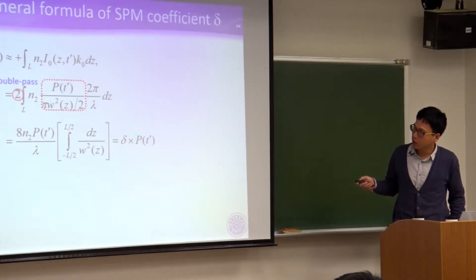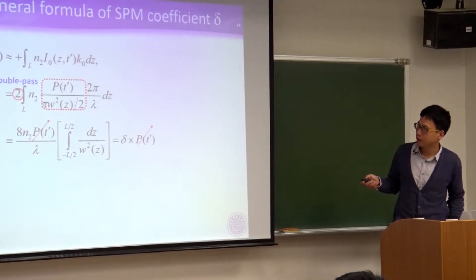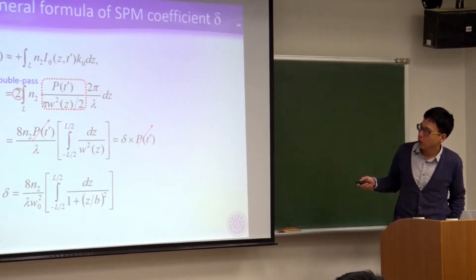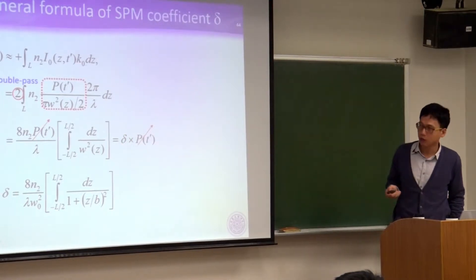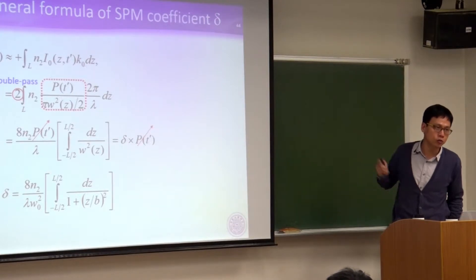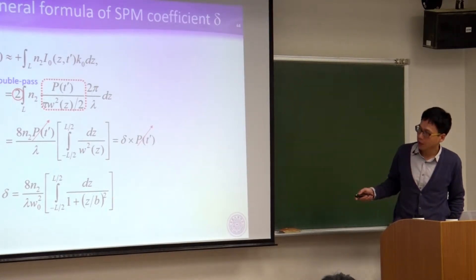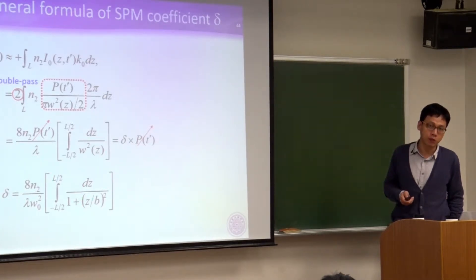P(t prime) appears on both sides and cancels. So the proportional constant delta — the SPM coefficient — equals 8 N2 over lambda, and from the Gaussian beam formula you extract W0 squared, the square of beam waist radius. The integration is then performed for the spatial function 1 over (1 plus z over B) squared.